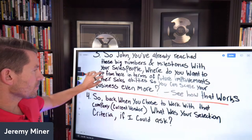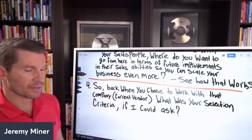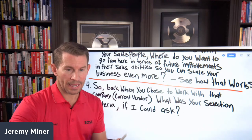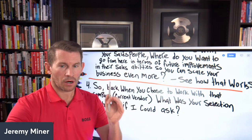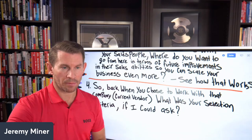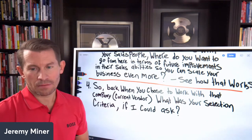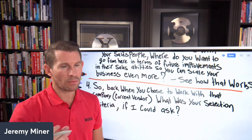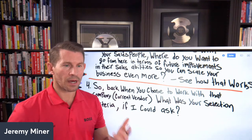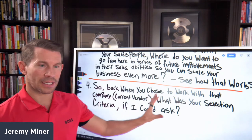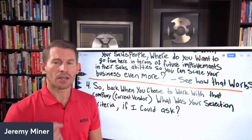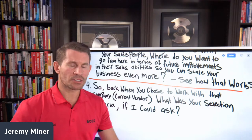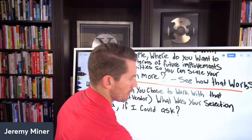Questions 3 and 4 are a two-question process — primarily B2B — you must ask them in sequence. First: 'Back when you guys chose to work with company ABC, can I ask what your selection criteria was, just so I have a better background?' They'll answer: 'When we chose company XYZ, we were looking for A, B, and C, and if they could do this and that.'